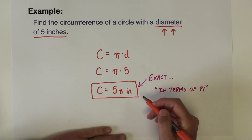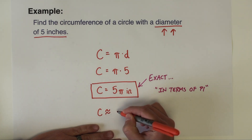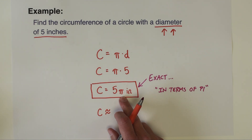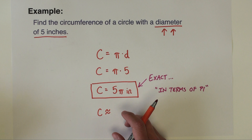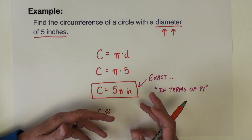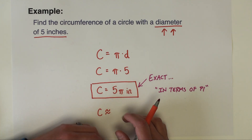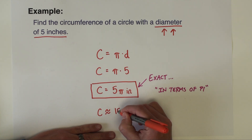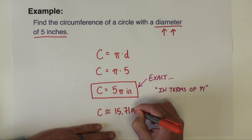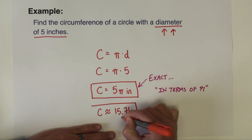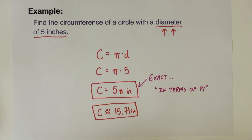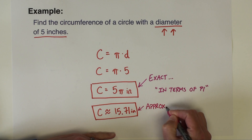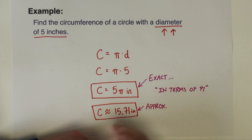If you want an approximate answer, go to the calculator and type 5 times pi. You can use 3.14 for your approximation or use the pi button on the calculator — all calculators will have one. Rounding to the nearest hundredth, you get 15.71 inches. So depending on whether you want an exact or approximate answer will dictate how you finish that problem.